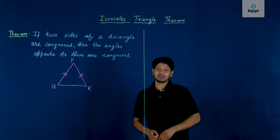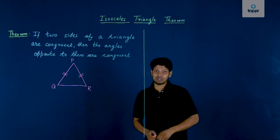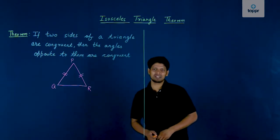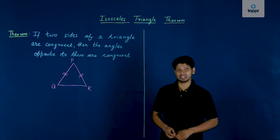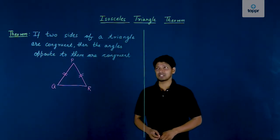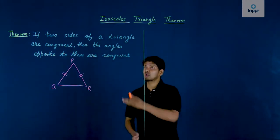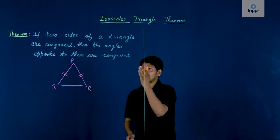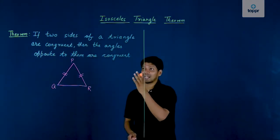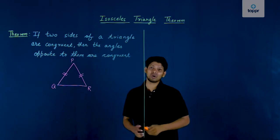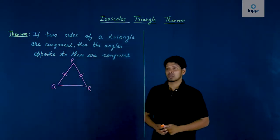Hi students, today's topic of discussion is the Isosceles Triangle Theorem. The theorem says: if two sides of a triangle are congruent, then the angles opposite to them are congruent.